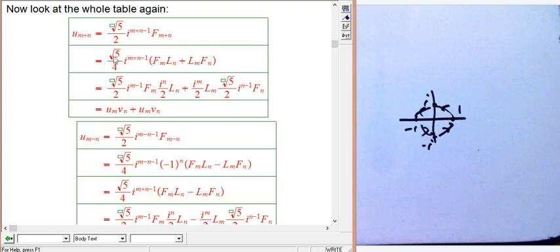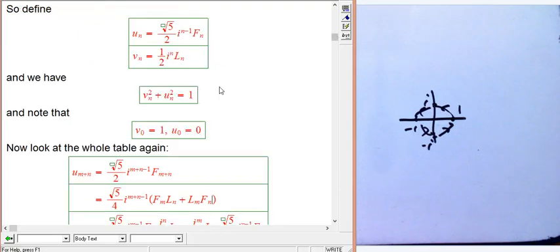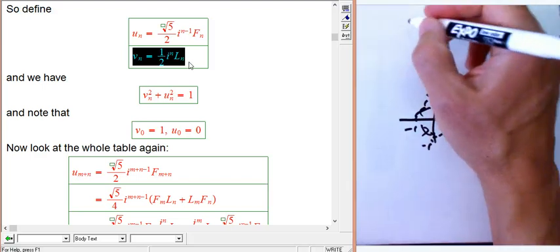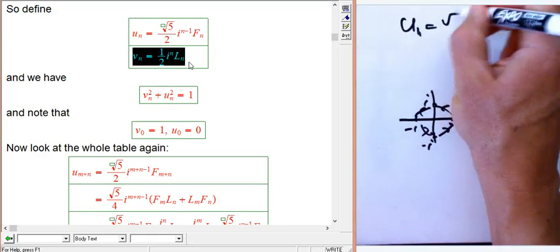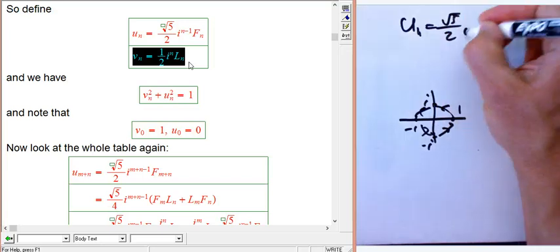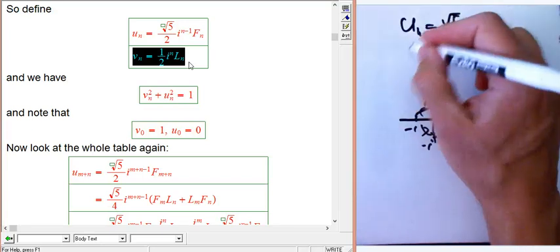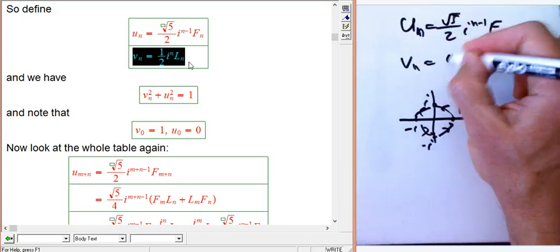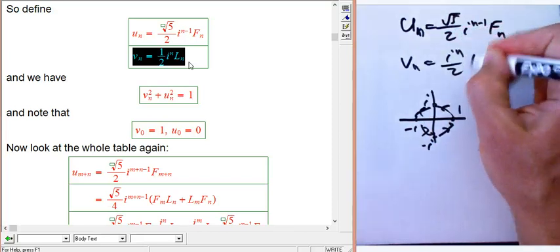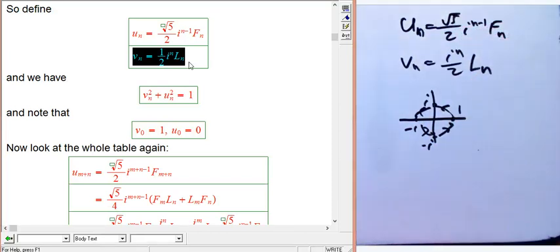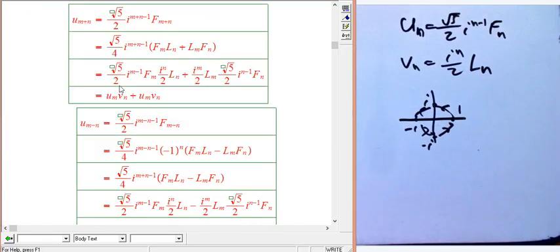So now I'm just going to split everything up. The root 5 over 2 wants to go with the F_m, and then there's an extra one half, conveniently enough, which goes with the L_n. And remember, the definition of v_n, I'm going to write these over here on my scratch because they're so useful. So for example, root 5 over 2, i to the n minus 1, F_n, that's u_n, and v_n is i to the n over 2 times L_n.